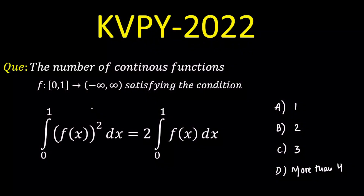Today we are going to solve a question on integration. The question is: find the number of continuous functions whose domain is the closed interval [0,1] and range is ℝ, satisfying the condition that the integration from 0 to 1 of the square of the function should be equal to 2 times the integration from 0 to 1 of f(x). How many functions are possible with this given condition? The following options are given.